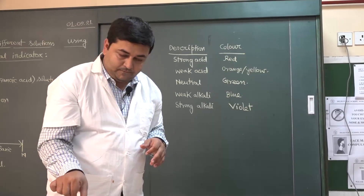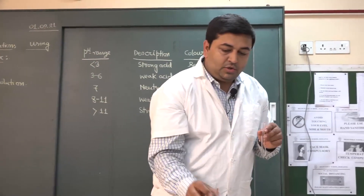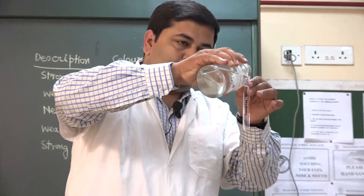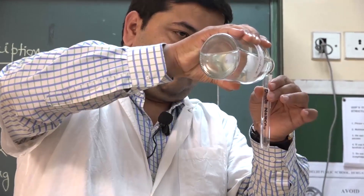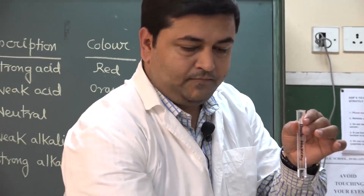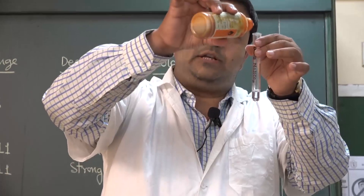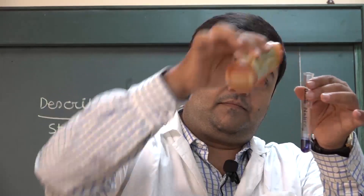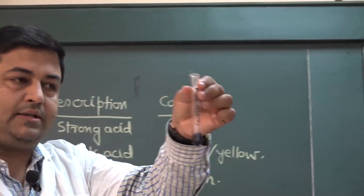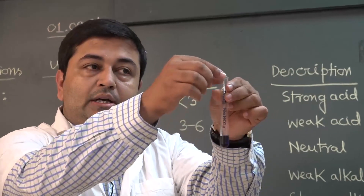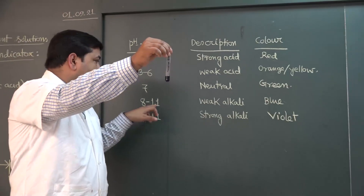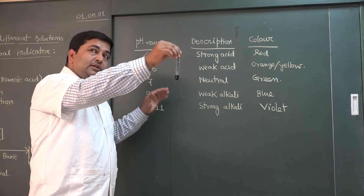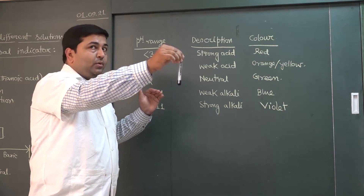Next I am collecting sodium carbonate solution and adding the universal indicator. The color is blue. When the color is blue it means it is a weak alkali with a pH range from 8 to 11. So both sodium hydroxide and sodium carbonate are above pH 7 — one is a strong base and one is a weak base.